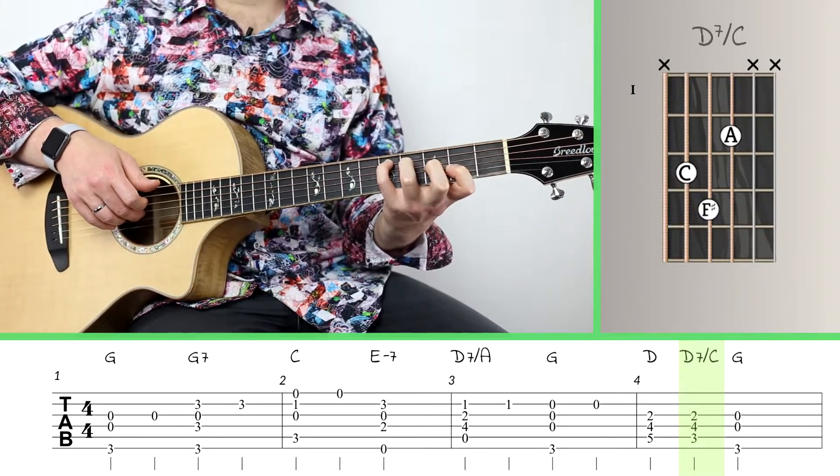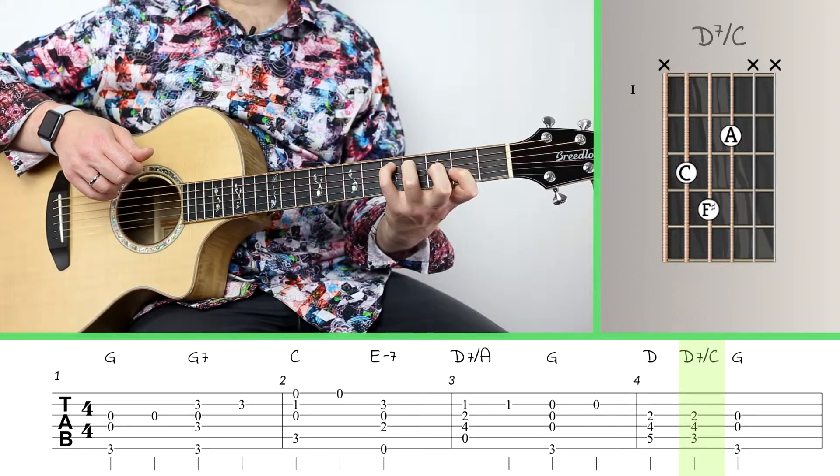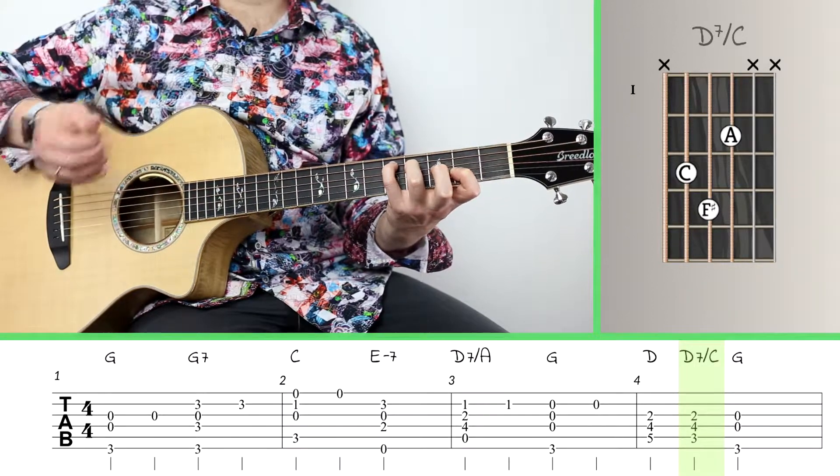And then I've got my third finger on the fourth fret of the fourth string for my F sharp, which is a third. And I've got my index finger on the second fret of the third string, giving me A, which is the fifth of the chord. So that's a full D triad.